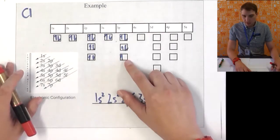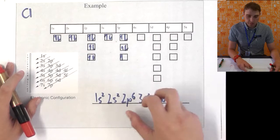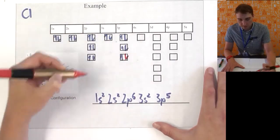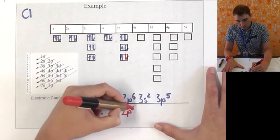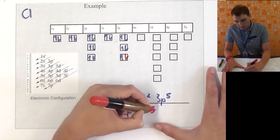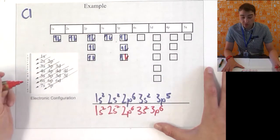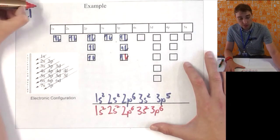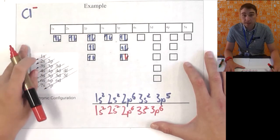In this case, if we look in the outermost shell, the third main shell, the 3p subshell, we can see that there's one space for an electron left. So, if I write out the electron configuration again, 1s2, 2s2, 2p6, 3s2, 3p6, now I've filled the outer shell, that's much more stable. I used one electron that I added in, so I'm going to have one more electron than protons, so that's going to give me the chloride ion, Cl-.